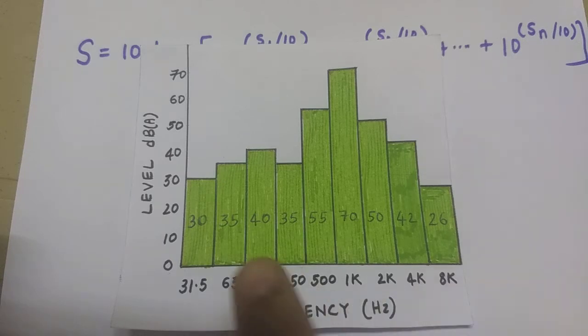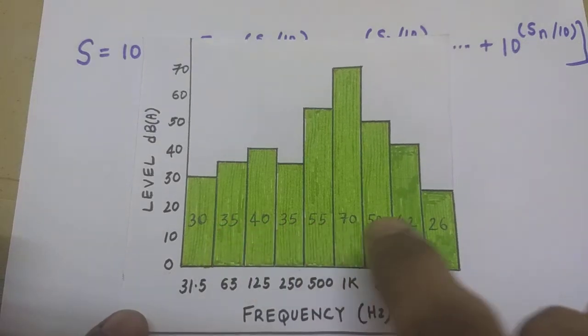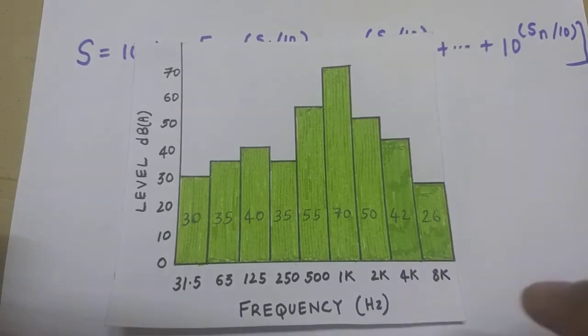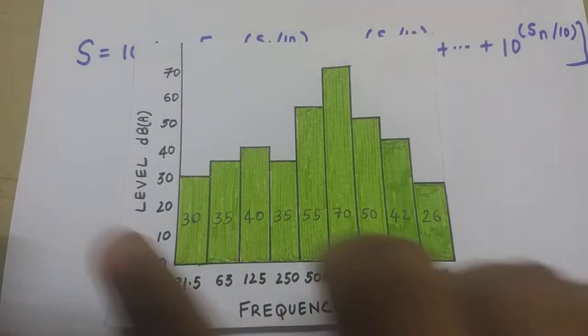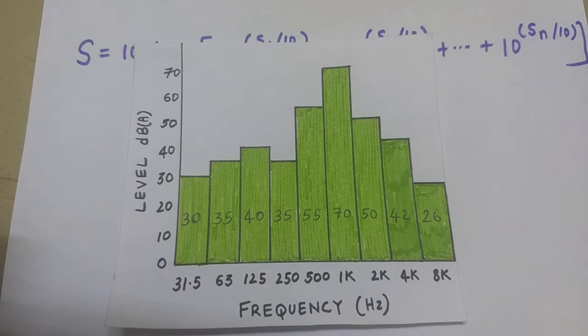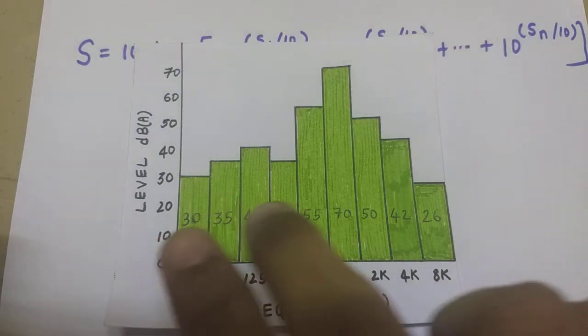So this is the octave band, these are the noise levels in each frequency band and our intention is to calculate the overall level of this noise which is nothing but the logarithmic average of all these values.